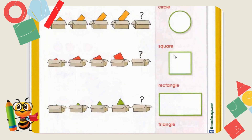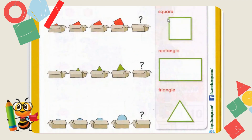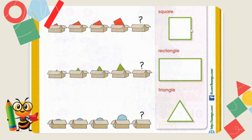The second shape is square. The spelling is S-Q-U-A-R-E. How many sides does a square have? Let's count: one, two, three, four. Yes, four sides make up a square.